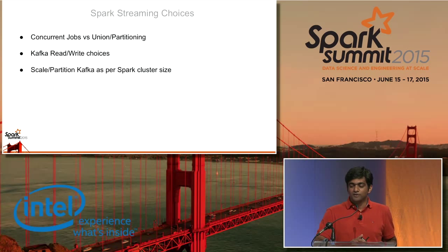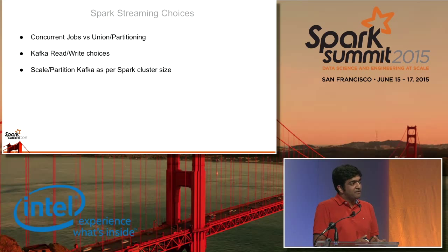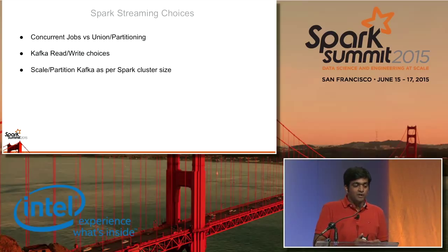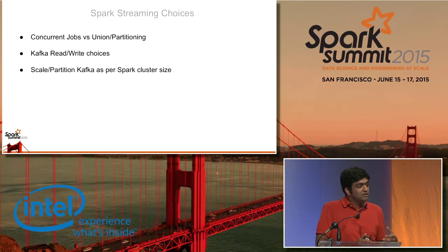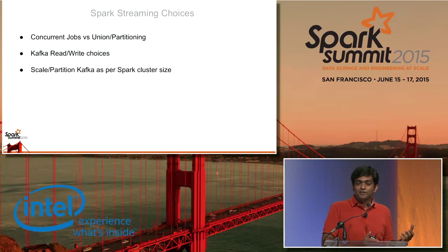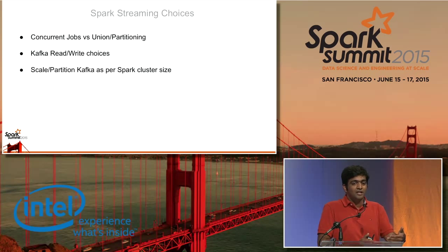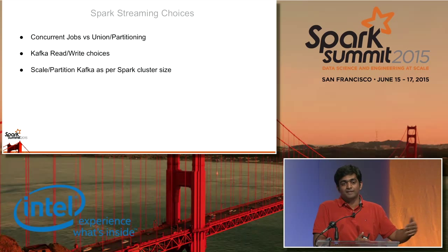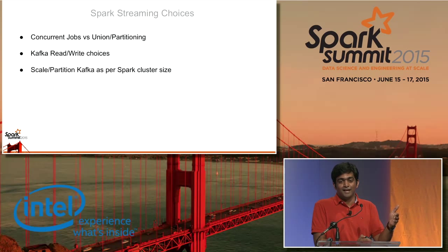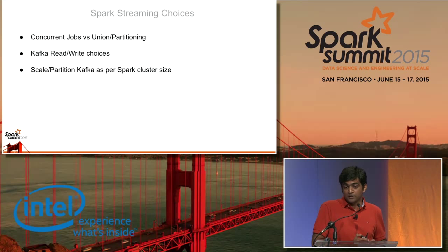In the Spark streaming app, certain choices we made affected the quality of the job in production. When running for a long time, we started seeing multiple issues: sometimes data just wasn't getting processed — it looked like it got stuck. Sometimes stuff was getting processed but really, really slowly. We had a batch interval of five seconds, but each batch would take several seconds more than that to process, eventually leading to a massive scheduling delay. Over several hours, you'd have a massive number of pending batches and data never getting processed in time, so 20-to-30-second delays would increase to one minute, two minutes, and eventually several minutes.